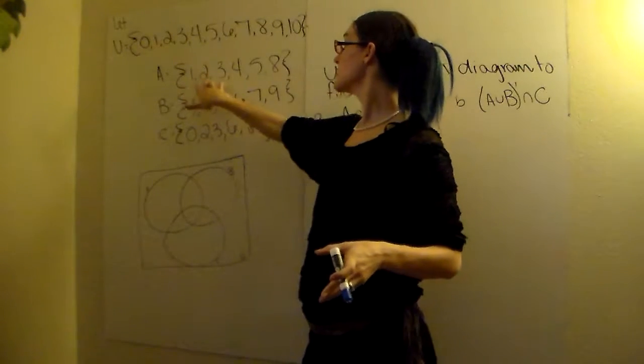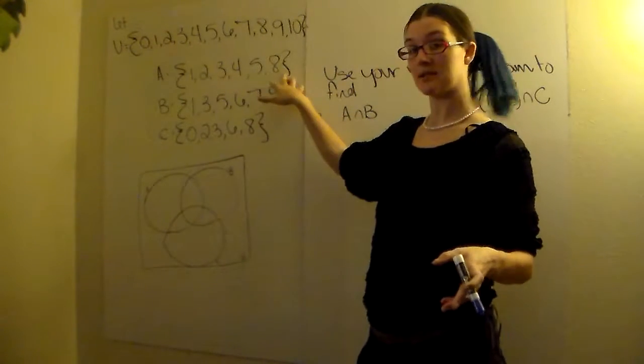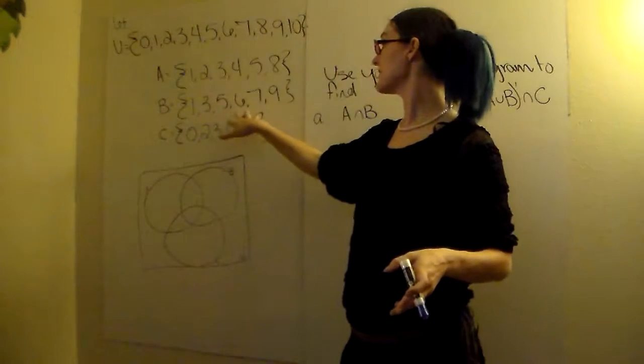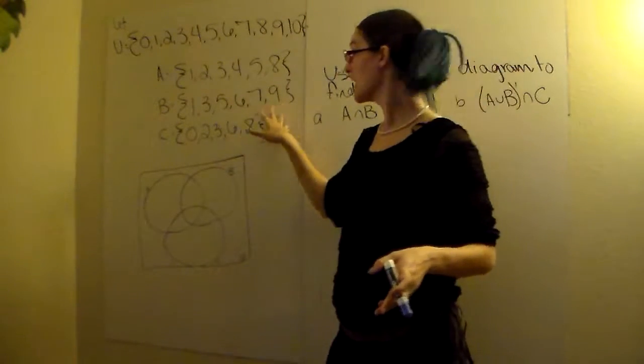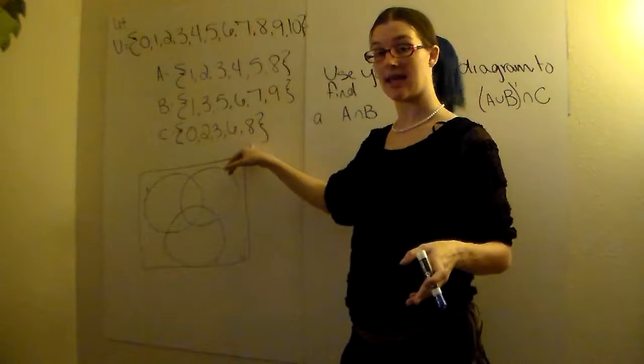So we have a universal set is zero all the way through ten. Make sure you're actually listing those out otherwise it's really easy to forget what is left over in that universal set. Set A is 1, 2, 3, 4, 5, and 8. Set B is 1, 3, 5, 6, 7, and 9. Set C is 0, 2, 3, 6, and 8.